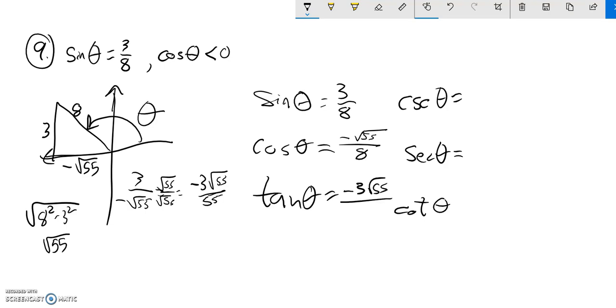Cotangent is the reciprocal of tangent, so I flip it to get negative square root of 55 over 3. Notice I went back to the original tangent before rationalizing, because if I flip the rationalized version, I'll have 55 in the denominator and have to do more work.